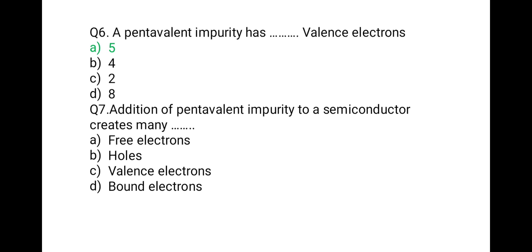The next question: addition of pentavalent impurity to a semiconductor creates many what? The correct option is free electrons. Its 4 electrons are shared with the semiconductor material and the fifth one remains free, so the correct option is free electrons.